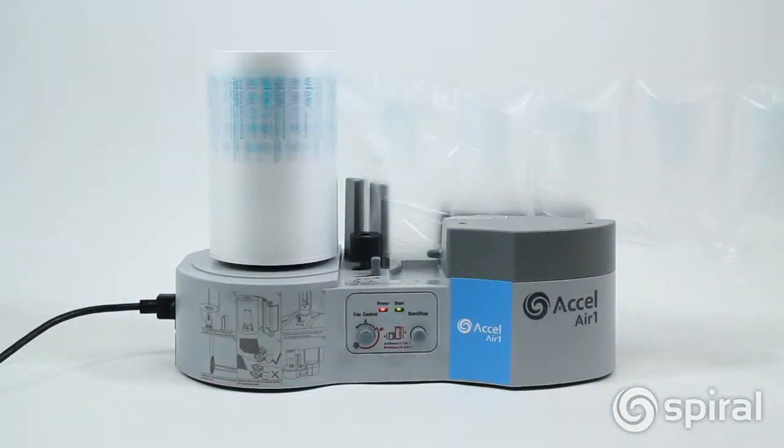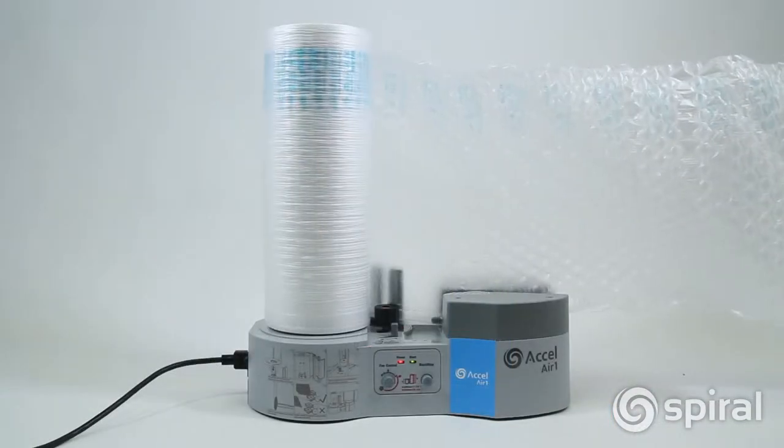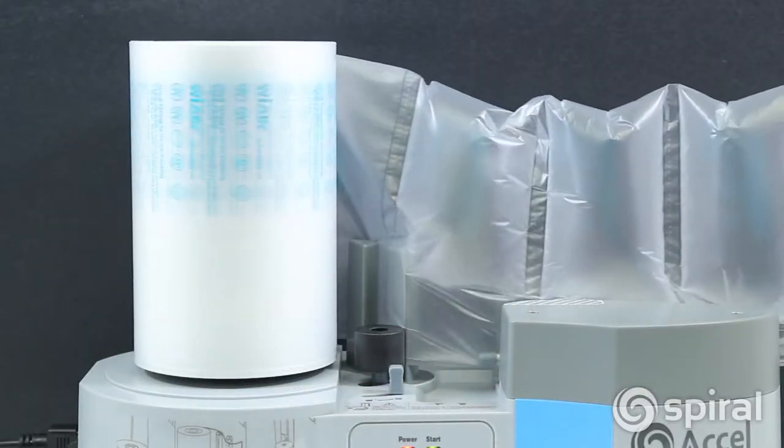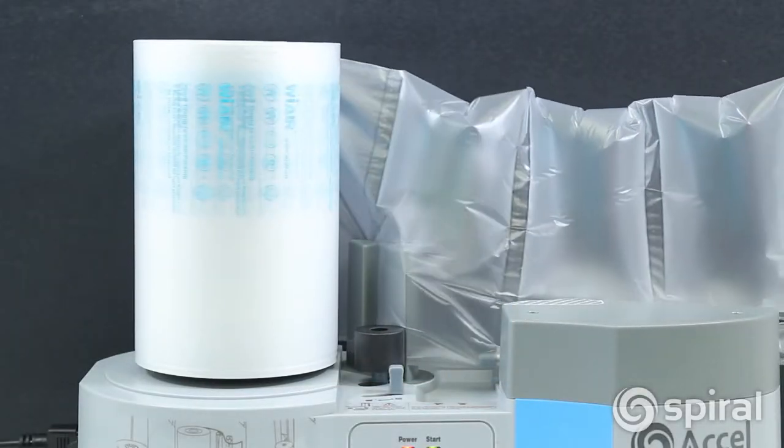Film is available in either air pillows or bubble pad film. The air pillows are designed for void fill application and each roll of film makes 2,000 pieces of air pillows that are seven and three-quarter inches by four inches.